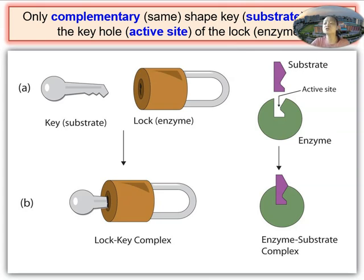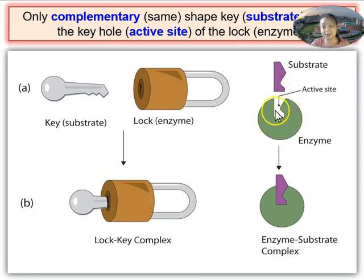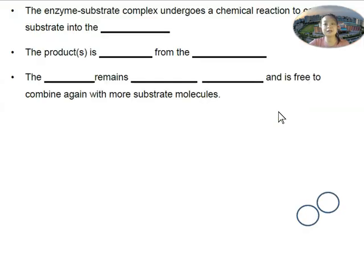The lock and key hypothesis tells you that enzymes are very specific in nature. And why are they specific? Because of the shape of the active site.